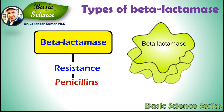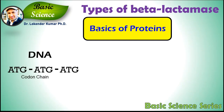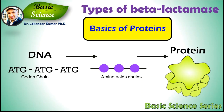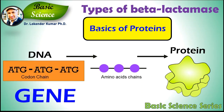Before explaining about the types of enzymes, let me tell you about the basics of proteins. DNA molecules have information in the form of triplet codons, and each codon gives the information of a particular amino acid. A stretch of DNA that encodes a particular stretch of amino acids or a functional protein is called the gene for that particular protein.